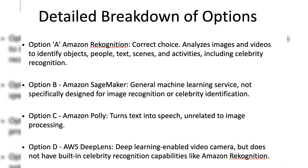Option A, Amazon Rekognition, is correct. Amazon Rekognition is an AWS service that can analyze images and videos to identify objects, people, text, scenes, and activities. It has specific capabilities for celebrity recognition, allowing you to detect and identify famous individuals in your image collection.